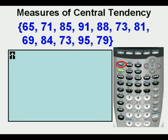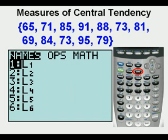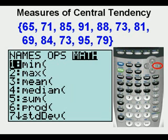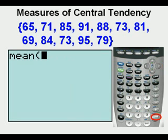We go to the LIST menu by pressing SECOND, then the STAT key that has LIST above the key. Now arrow twice to the right to get to the MATH submenu. Scroll down twice to access MEAN. Press ENTER.